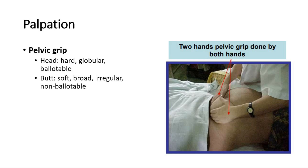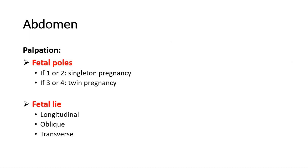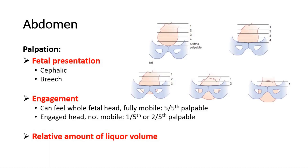This differentiates cephalic presentation from breech presentation. On palpation, we can count the fetal poles — one or two poles suggests a singleton pregnancy, while three or four poles suggests twins. Fetal lie is either longitudinal, oblique, or transverse; a normal lie is longitudinal. Fetal presentation is either cephalic or breech. For engagement, if the whole fetal head is felt above the pubic symphysis and is fully mobile, it is five-fifths palpable. If the head is engaged and not mobile, it is one-fifth or two-fifths palpable. Also assess the relative amount of liquor volume, whether it is clinically adequate or not.